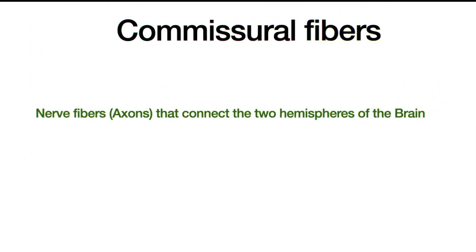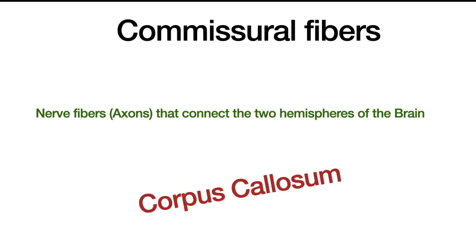Now let's talk about commissural fibers. Commissural fibers are nerve fibers, or axons, that connect the two hemispheres of the brain. The corpus callosum is made up of commissural fibers because it connects the two hemispheres.